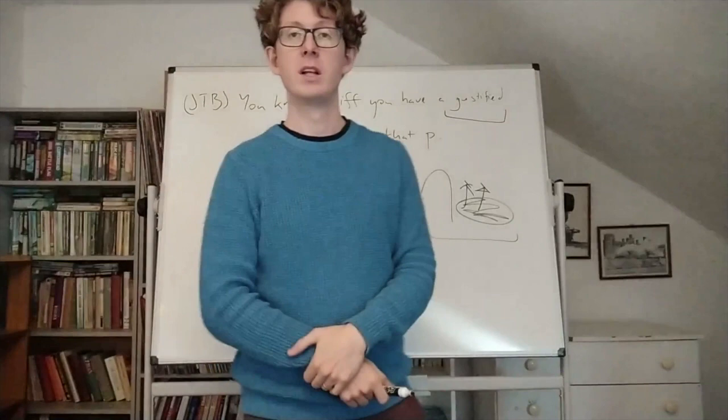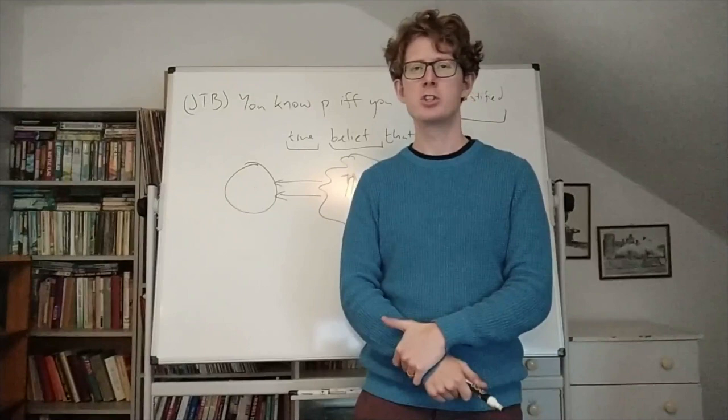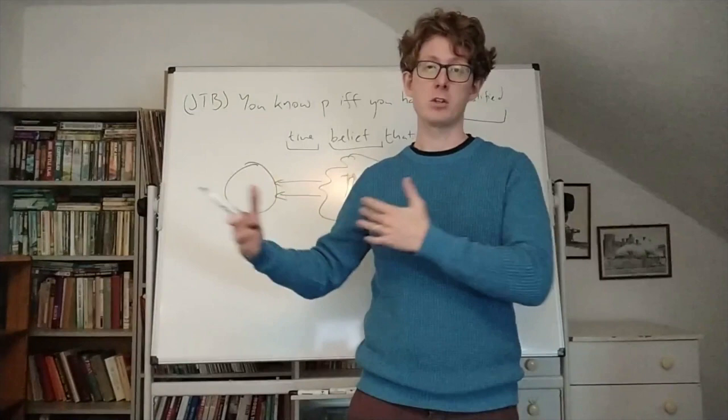So that is one kind of example with the structure of a Gettier case. It's a case where you have justified true belief, and yet you lack knowledge. And you seem to lack knowledge because you lack this reliable connection between your beliefs and the truth.